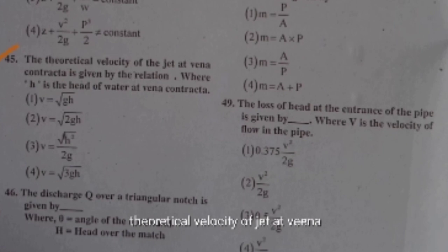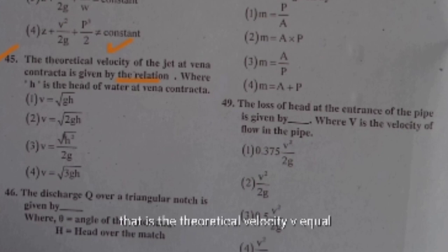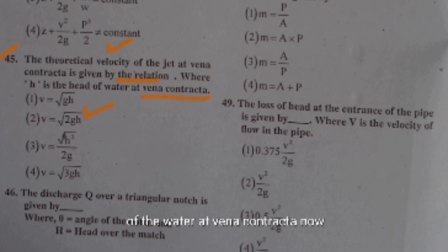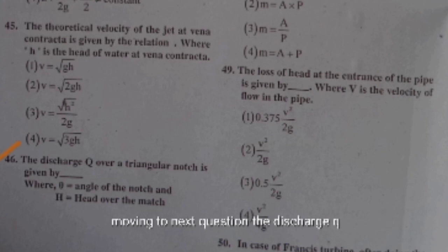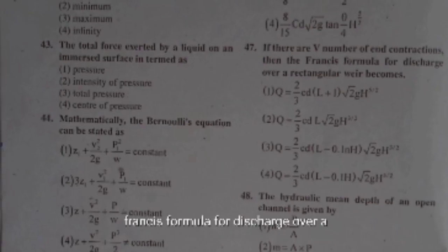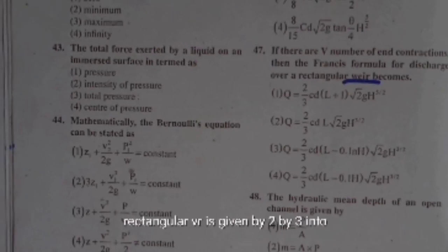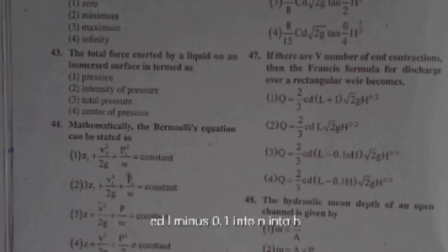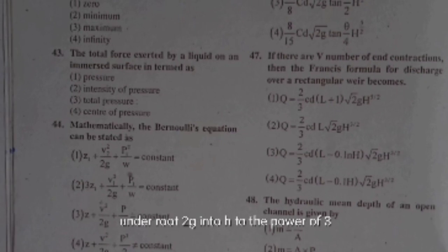The theoretical velocity of a jet at vena contracta is v = √(2gh), where h is the head of water. The discharge Q over a triangular notch is given by (8/15) × Cd × √(2g) × tan(θ/2) × h^(5/2). Francis's formula for discharge over a rectangular weir is (2/3) × Cd × (L − 0.1nH) × √(2g) × H^(3/2).